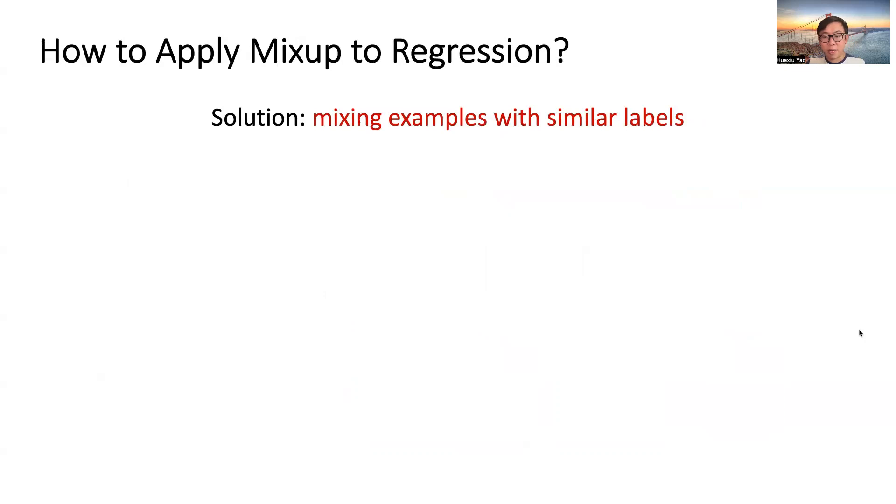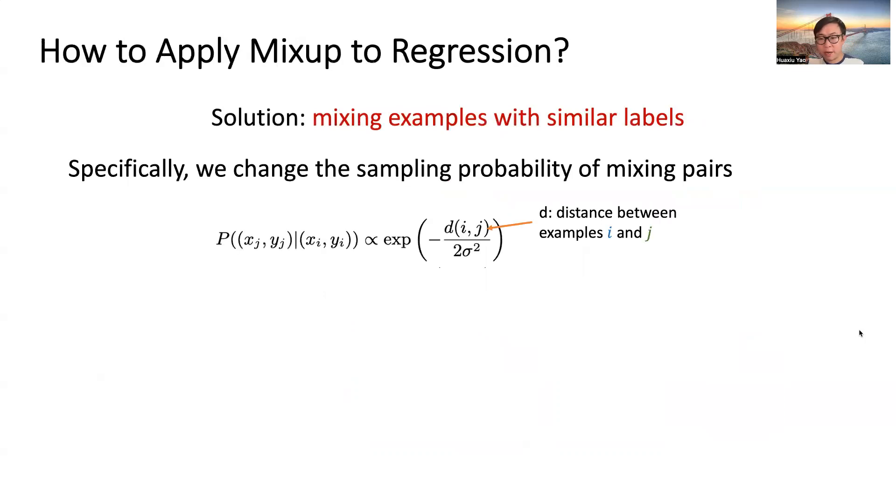So in the paper, we instead mix similar examples. Specifically, we change the sampling probability of mixing pairs. Given an example XI YI, the probability of sampling another example XJ YJ for mixing is proportional to the distance between example I and J.